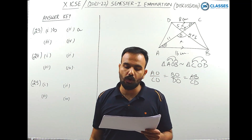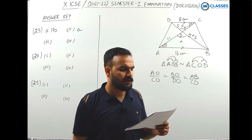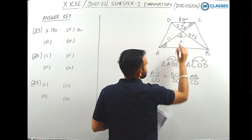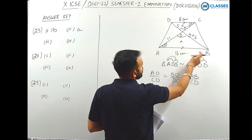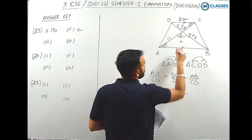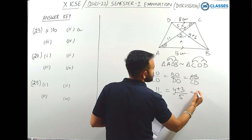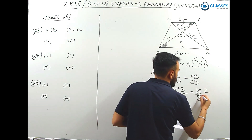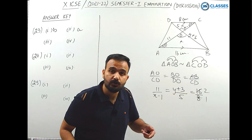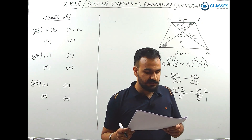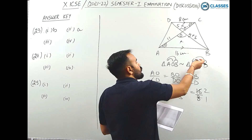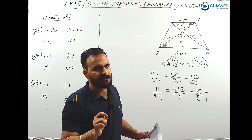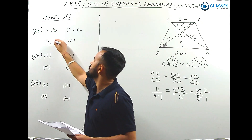Part (ii): the corresponding proportional sides of the similar triangles. Writing the similarity statement: triangle AOB ~ triangle COD. The corresponding sides ratio is AO/CO = BO/DO = AB/CD. This ratio is given at option A, so option A is the right answer. Part (iii): the ratio of sides. AB/CD = 16/8 = 2:1. Since triangles were given as COD and AOB, the ratio is 1:2. Option B is correct.